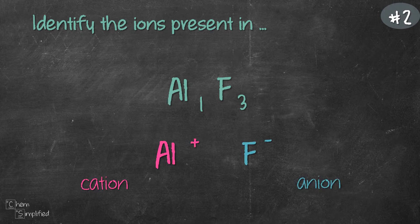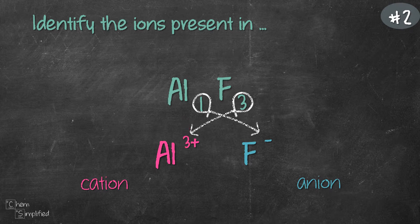So we'll figure out the actual charge next using the crossover method. 1 from Al will cross over to F, so that means our anion is F-. The 3 from F will cross over to Al, so the charge for our cation is actually Al3+. Now that makes sense because Al is in group 3 main group, so therefore it will form a +3 ion.